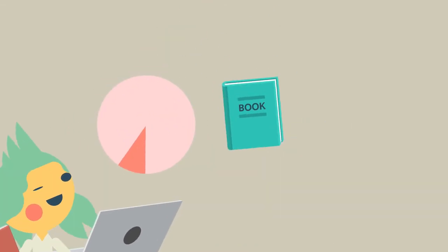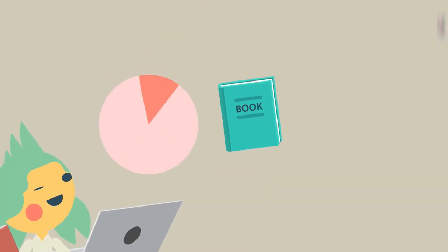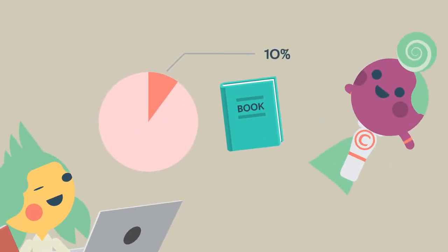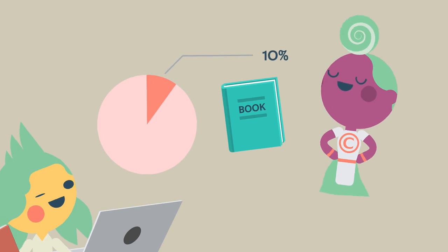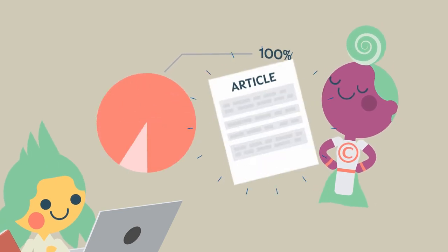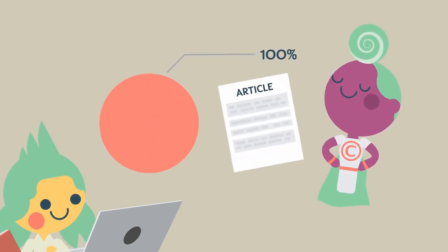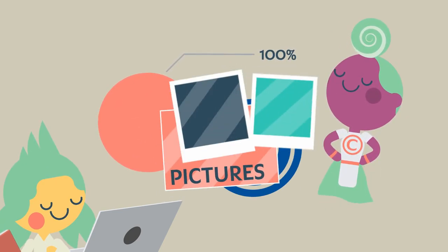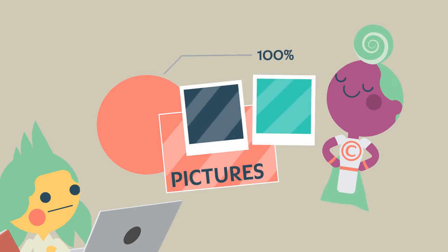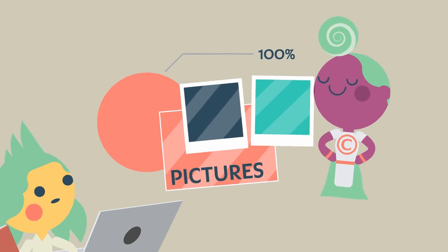As a general rule, you can make a copy of up to 10% of a book, even if it's online. You can make a copy of an entire article, and you can also make a copy of an image. Just make sure you acknowledge your sources.